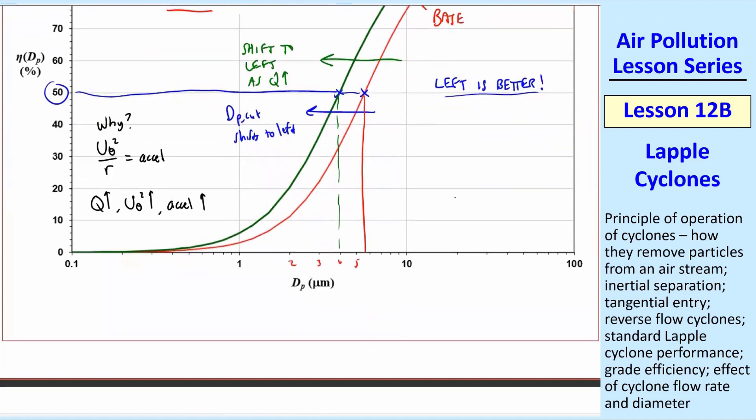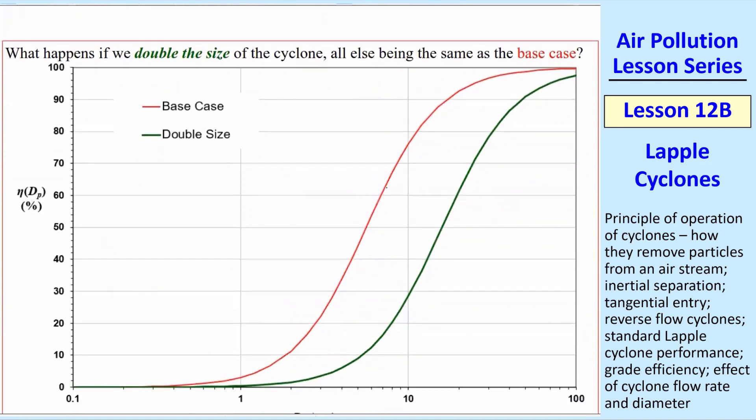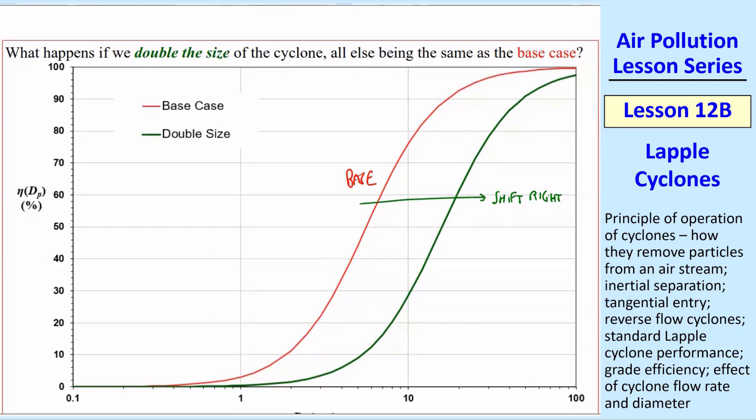Let's do another what-if analysis. Now, what if I double the size of the cyclone, keep the same flow rate, keep the same everything else, but I just make this bigger? So now what happens? Well, again, the red one is the base, and the green one here is the one that's doubled in size. So now, I actually shift to the right. Same flow rate, same everything, same particles, but I have a bigger cyclone. And you can see that the DP_cut shifts quite radically to the right, and since left is better, right is worse. So this actually made everything worse.